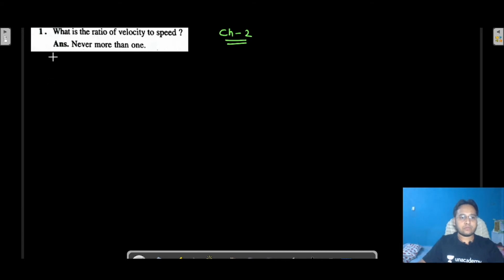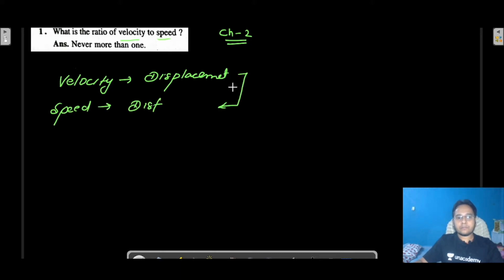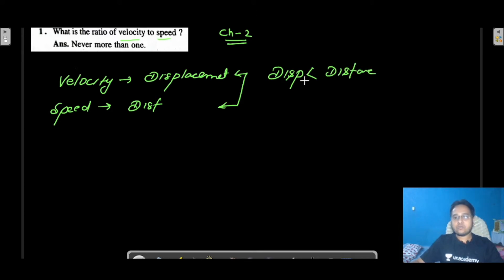Let's start with Question Number 1: What is the ratio of velocity and speed? The answer is never more than one. We know that velocity depends on displacement, and speed always depends on distance. The concept from the chapter is that displacement is less than or equal to distance.